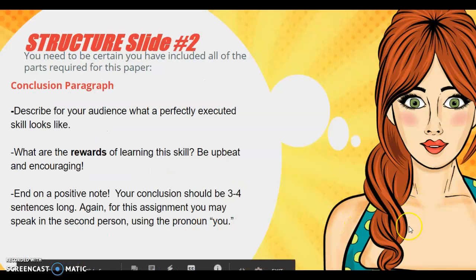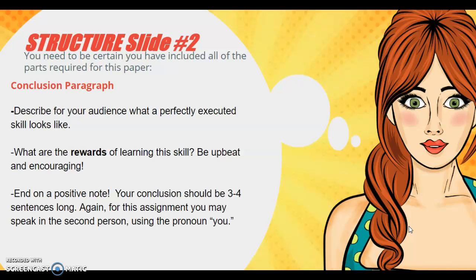Your final paragraph is your conclusion paragraph. You need to describe for your audience what a perfectly executed skill looks like — for example, describing what that grilled cheese sandwich looks like with detail. Then explain what the rewards are for learning this skill, why it's a great thing to be able to do. Be upbeat and encouraging. This conclusion paragraph should be three to four sentences long. For this assignment, you may speak in the second person and use the pronoun 'you,' which is acceptable here unlike in standard academic writing.